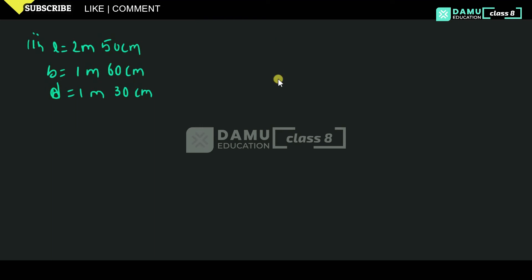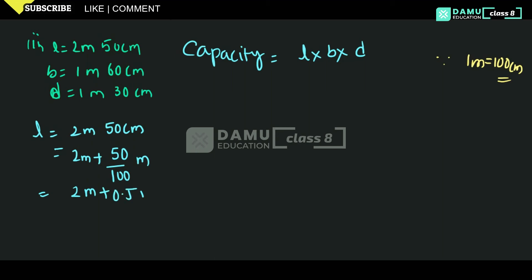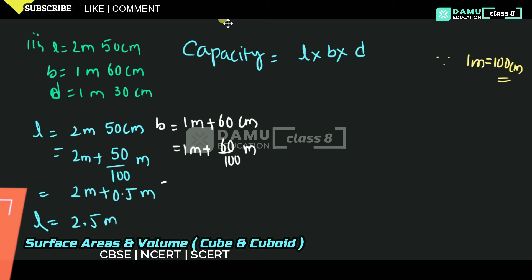For the second tank, we are again given length, breadth, and depth, and we need to find capacity. Capacity equals length into breadth into depth. Length is 2 meters 50 centimeters = 2 + 50/100 = 2.5 meters. Breadth is 1 meter 60 centimeters = 1 + 60/100 = 1.6 meters.